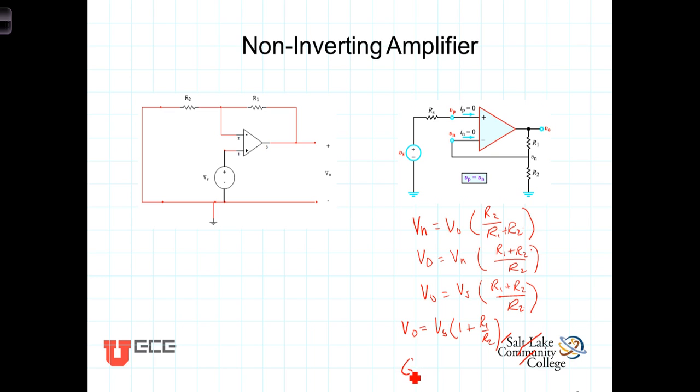We say that the gain G, the closed loop gain, the gain that we get because of this feedback circuit, is equal to 1 plus R1 over R2. Again we refer to that as the gain of the non-inverting amplifier. We'll see when we get to the inverting amplifier configuration that its gain is just slightly different than this.